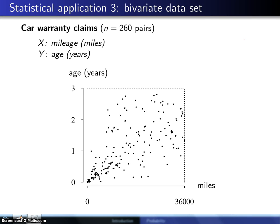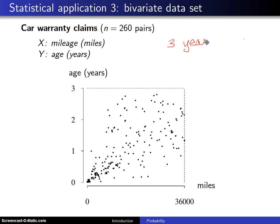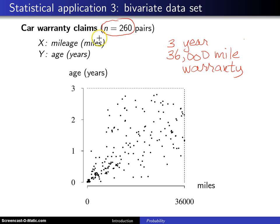Here is a second example of a bivariate data set, and this has to do with car warranty claims. Some cars have a three-year 36,000-mile warranty — whichever of those two occurs first: three years pass, or 36,000 miles on the car. The sample size is 260 pairs of data. Notice in this case X is given in miles but Y is given in years — it's okay to have different units on the two values. Each dot represents a warranty claim.